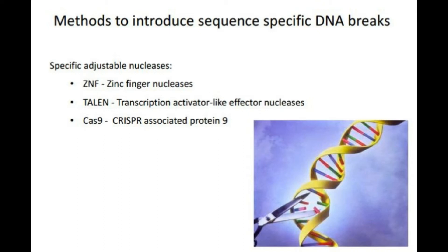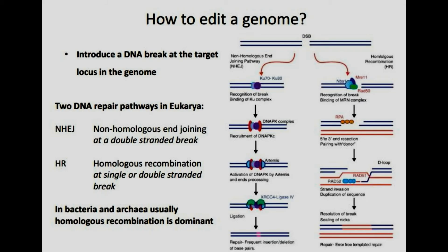The DNA repair pathways that we know in eukaryotes are the non-homologous end joining ones, which include a double-stranded break, and a homologous recombination one, where we have a single or a double-stranded break to begin with.